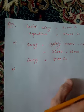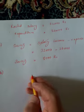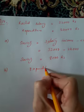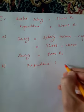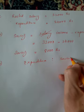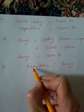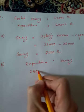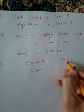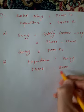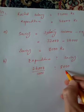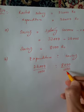Part b asks: Find the ratio of expenditure to saving. Expenditure is 24,000 and saving is 8,000.